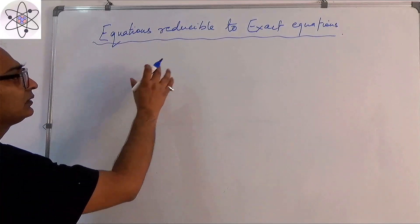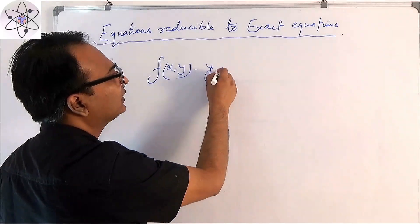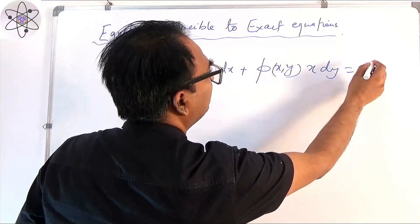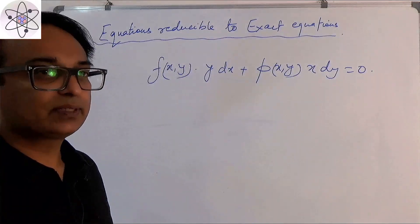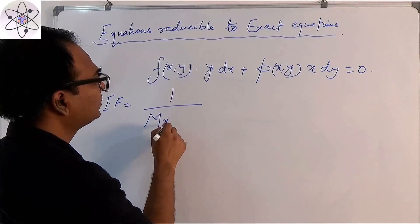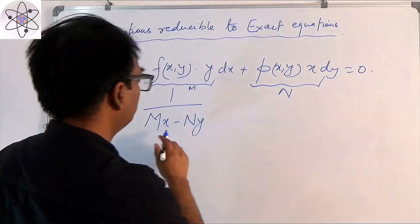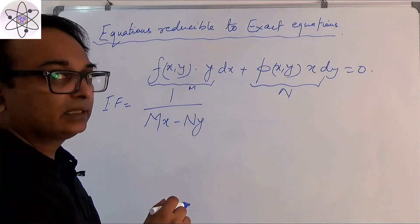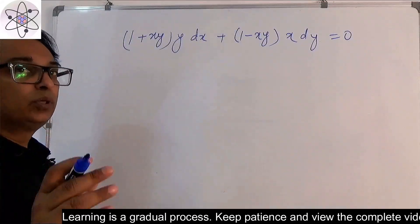Today's topic is part 2. We will discuss equations of this form: let there be a function of xy into y dx, plus another function of xy into x dy equal to 0. If any equation is in this form, we can transform it into an exact differential equation using an integrating factor equal to 1 by (M·x minus N·y), where this is our M and this is our N. We multiply the equation with this integrating factor and then verify the equation becomes exact.